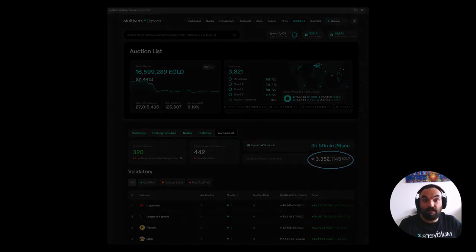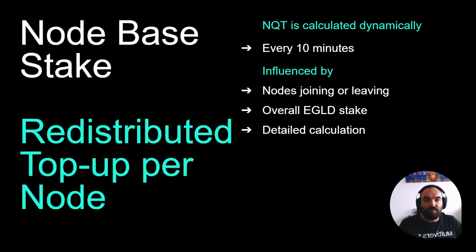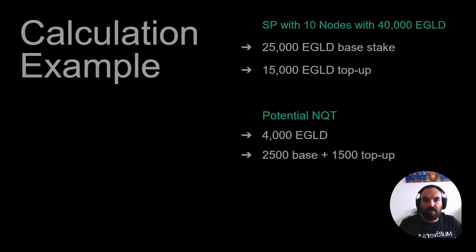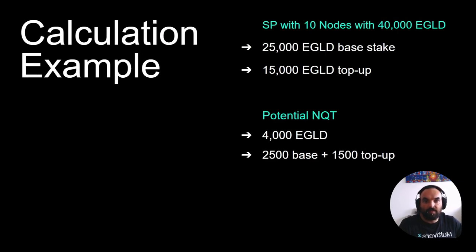How do we calculate this NQT? NQT is calculated dynamically by the network approximately every 10 minutes. It is influenced by the number of nodes leaving or joining the network and the overall EGLD stake. It is very simple to calculate — basically a sum, an average of the node-based stake and the redistributed top-up per node.